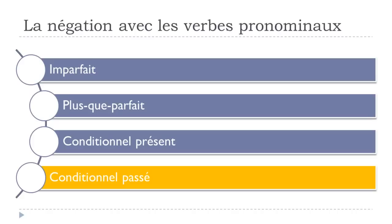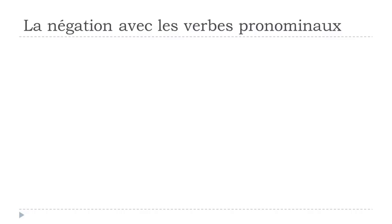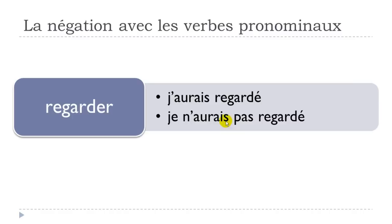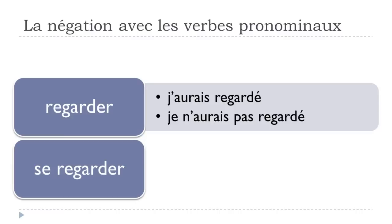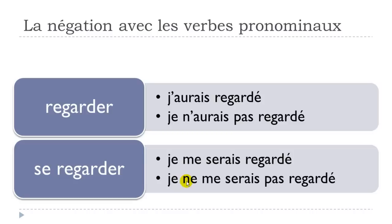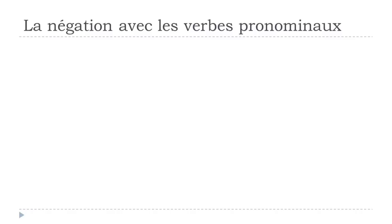LE CONDITIONNEL PASSÉ is a compound tense, so it behaves exactly as LE PASSÉ COMPOSÉ and LE PLUS-QUE-PARFAIT. For REGARDER: J'AURAIS REGARDÉ, negative JE N'AURAIS PAS REGARDÉ. For SE REGARDER: JE ME SERAIS REGARDÉ, negative JE NE ME SERAIS PAS REGARDÉ. The same structure applies for the subjonctif, LE PASSÉ SIMPLE, and LE FUTUR ANTÉRIEUR — all tenses follow the same rule.